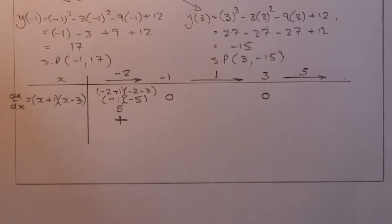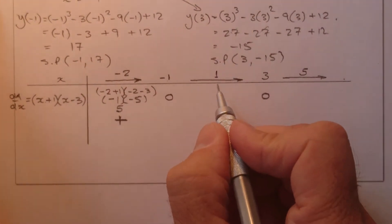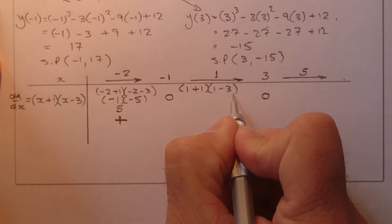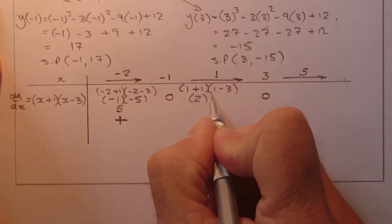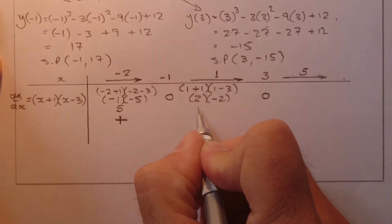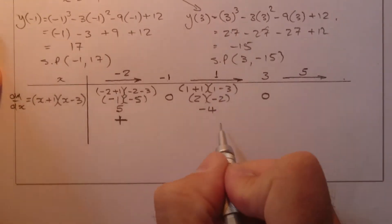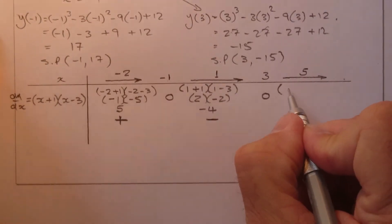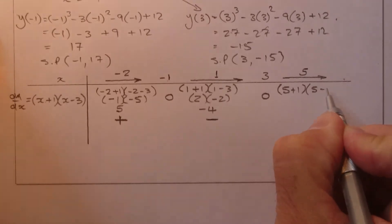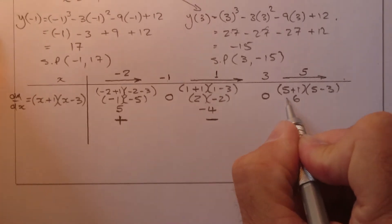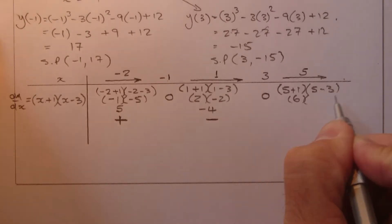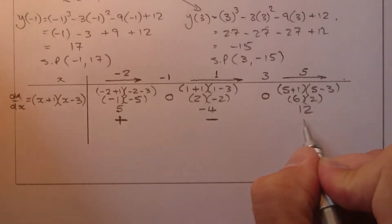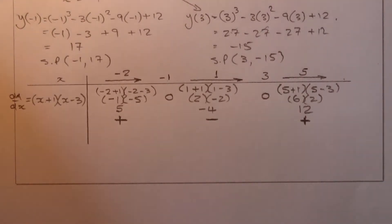Substituting x equals 5 into the brackets: (5 plus 1)(5 minus 3) gives 6 times 2, which equals 12 — a positive number. So the slope is positive beyond x equals 3.